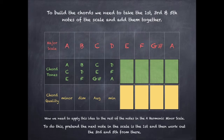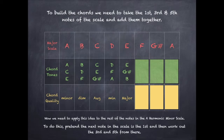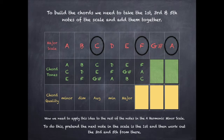To build a chord on the fifth scale degree, we take the fifth, the seventh, and the second notes from the scale — the E, the G sharp, and the B — and we end up with a major chord. To build a chord on the sixth scale degree, we take the sixth, the eighth, and the third notes of the scale — the F, the A, and the C — and when we combine those three notes together, we end up with a major chord.